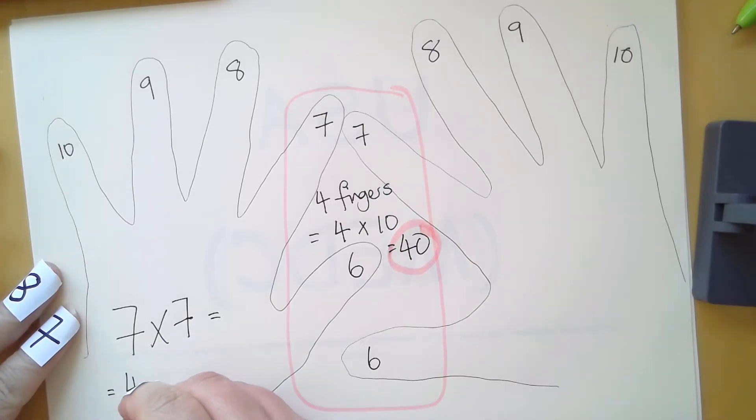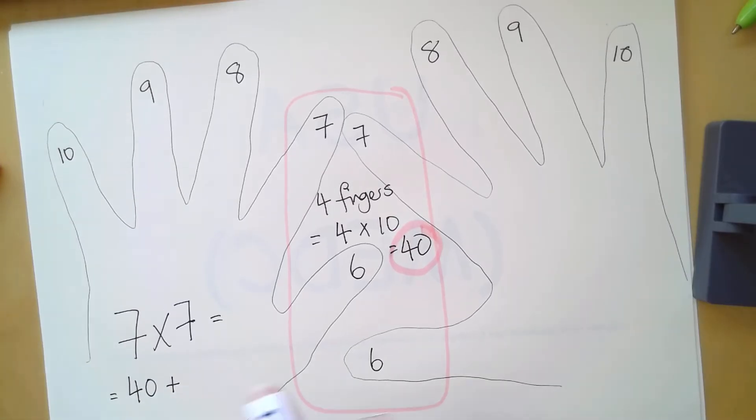So the first number we have is 40. I'm going to write this down here: 40, and I'm going to add an addition symbol.